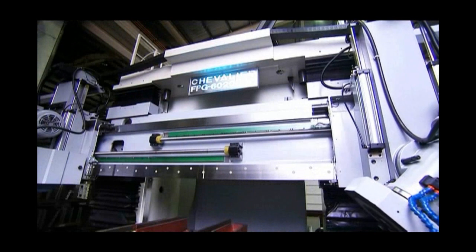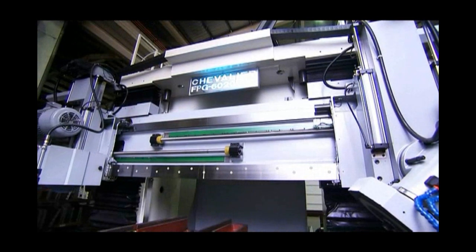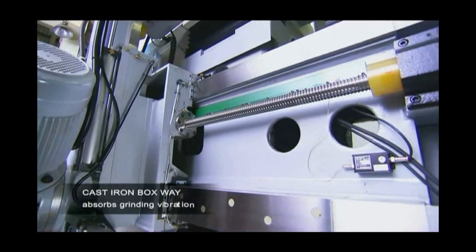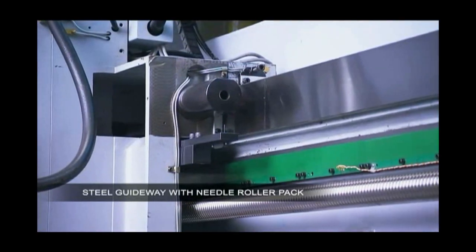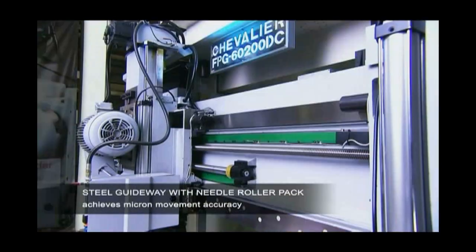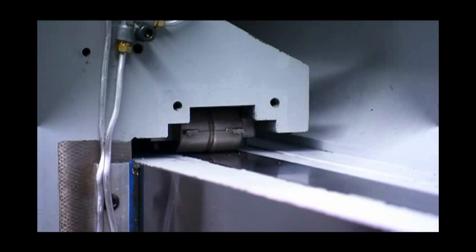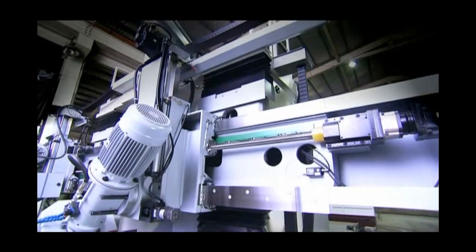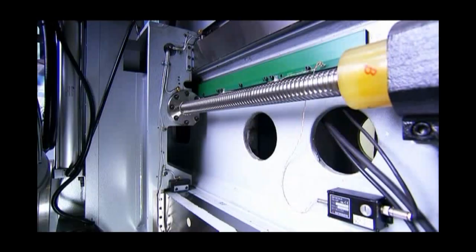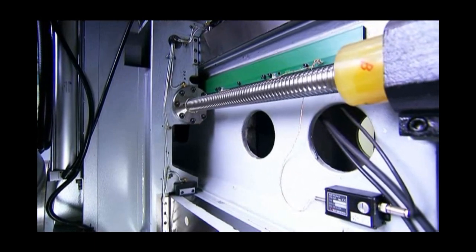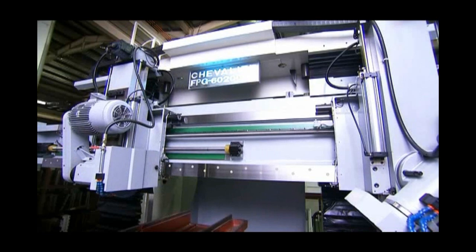The cross-slide design is another patent-pending feature of the FPG. The FPG beam uses cast-iron boxways to absorb grinding vibration and steel guideways with needle roller packs to achieve micron movement accuracy. The needle roller bearings take 60% of the loading so that only 40% is applied to the boxways. This hugely enhances positional accuracy and smooth movement whilst making sure that chattering is negligible.